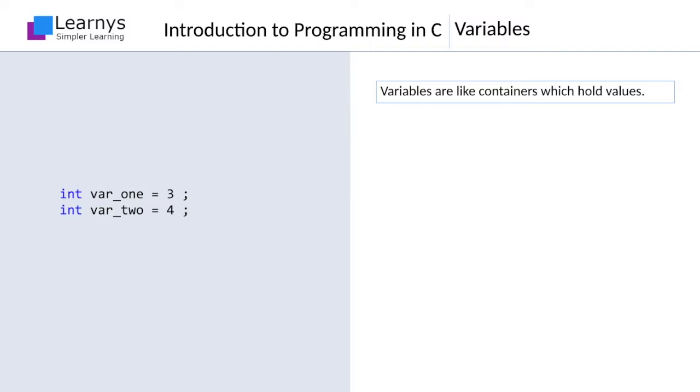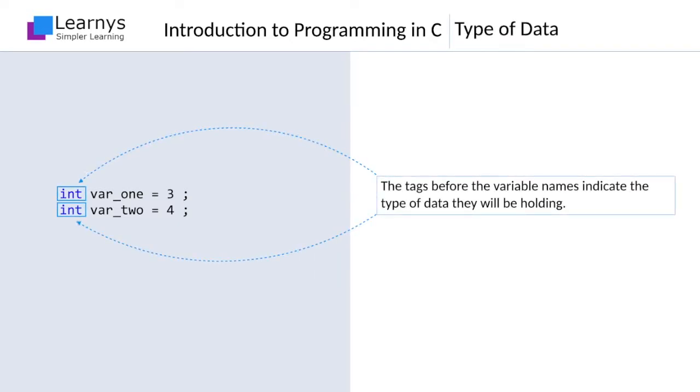Let us understand each element of these two statements. The tags before the variable names indicate the type of data they will be holding. The tag before var_one and var_two is int, which is shorthand for integer. By putting int before var_one and var_two, they have been designated to hold integer type of data.